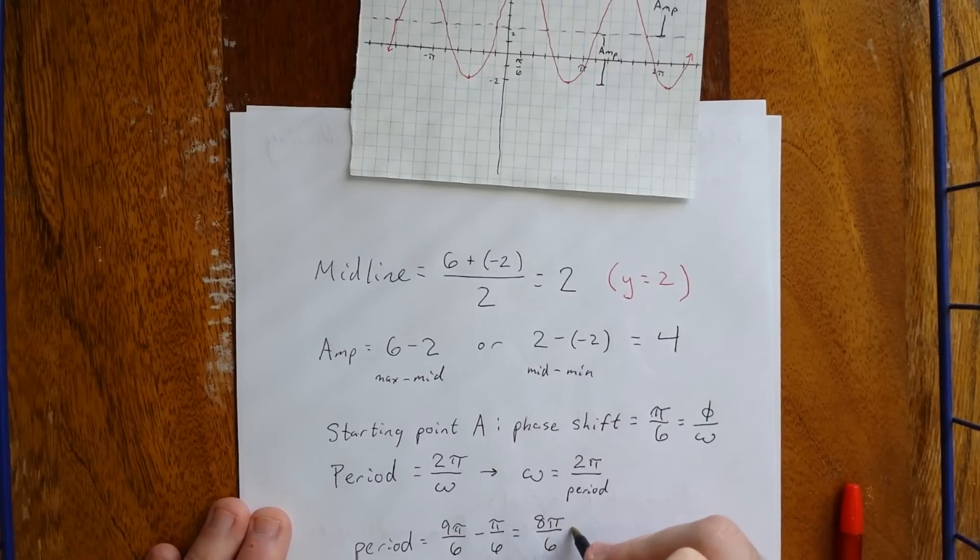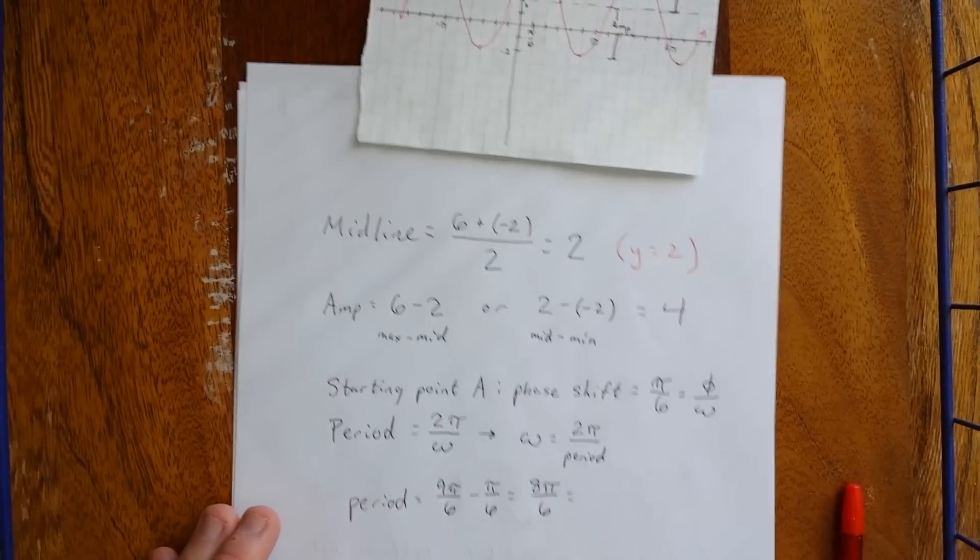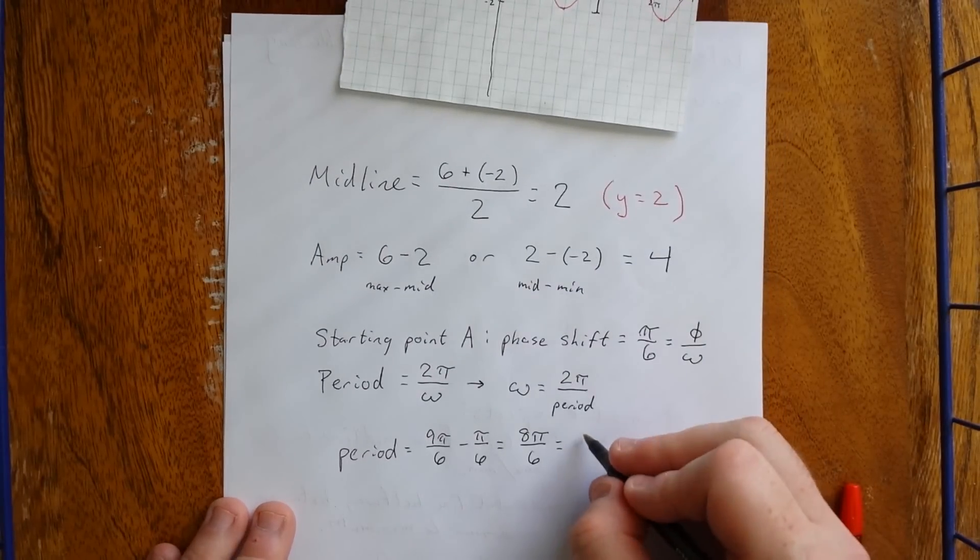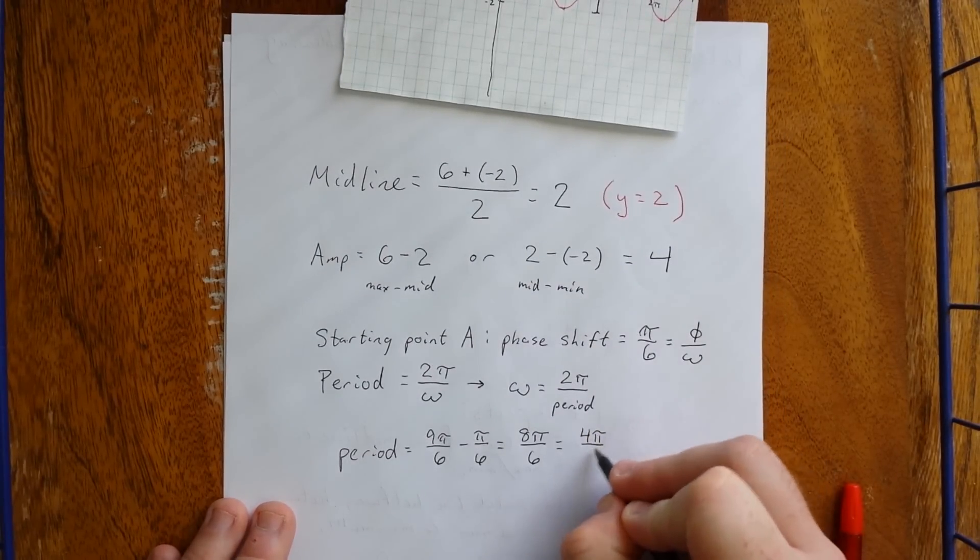By counting up by pi over 6 at a time, this does two things for us. One, it allows us to already establish a common denominator. And two, it makes the subtraction a lot easier. Go ahead and refer to that as 4 pi over 3.